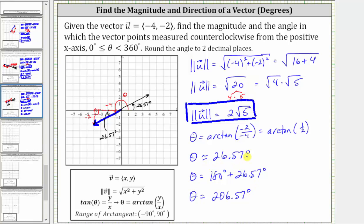Let's call the 26.57 degrees theta sub one, so we're not using the same variable for two different angles. The angle we're looking for is 206.57 degrees.